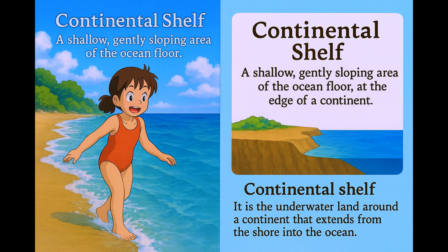This gradual transition from shallow to deeper water is similar to how a continental shelf works, where the ocean floor starts at the edge of a continent and gently slopes downwards before dropping steeply into the deep ocean. Just like the beach where the water is shallow near the shore before suddenly getting deeper, the continental shelf is that initial shallow area of the ocean floor before it plunges into the deep sea, making it like a natural extension of the land beneath the ocean.